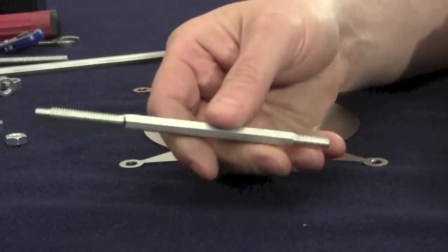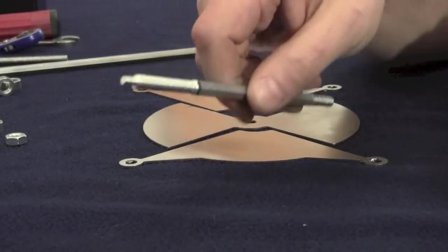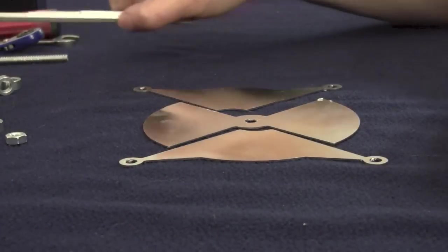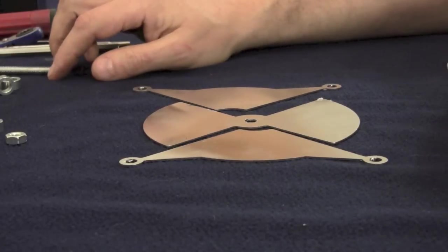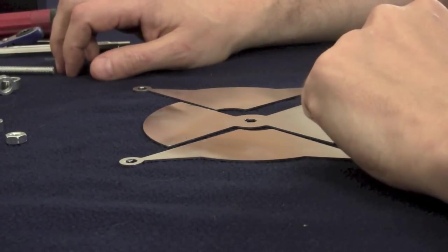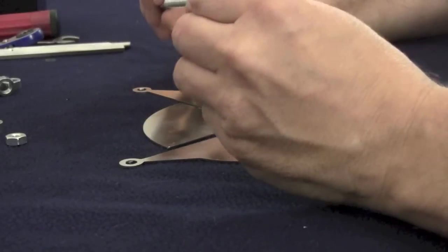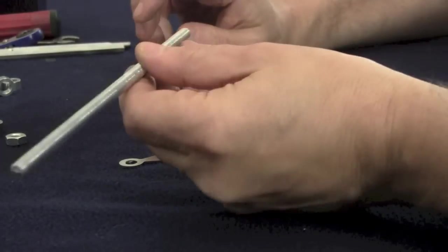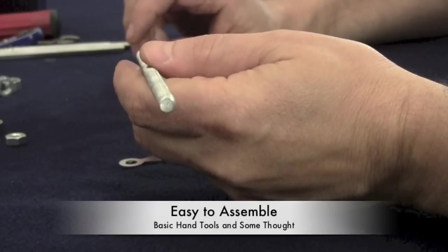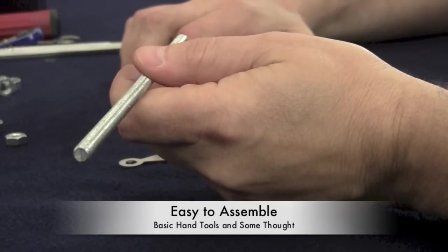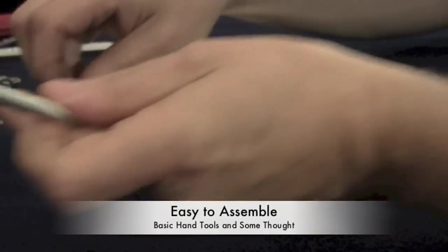Now I realize not everybody has access to this and doesn't necessarily want to pay for somebody to machine it, so what I'm going to show you today is that we don't have to get that fancy. It can be just as effective in using just regular quarter-inch aluminum threaded rod which I supply. It's very inexpensive to buy.